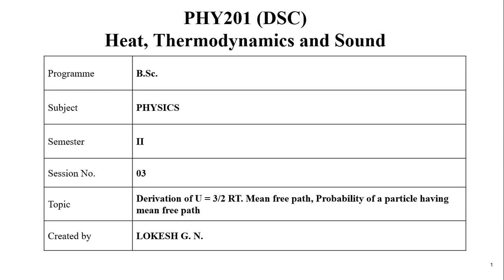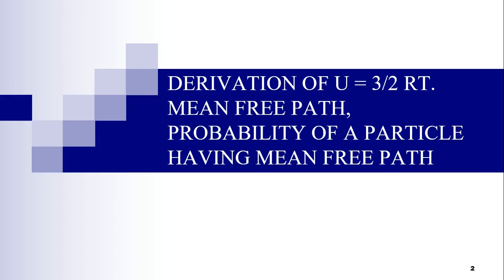Dear students, I welcome you once again to the second semester of BSc physics class. In this session, we shall learn about the derivation of U is equal to 3 by 2 RT, mean free path, and the probability of a particle having mean free path.